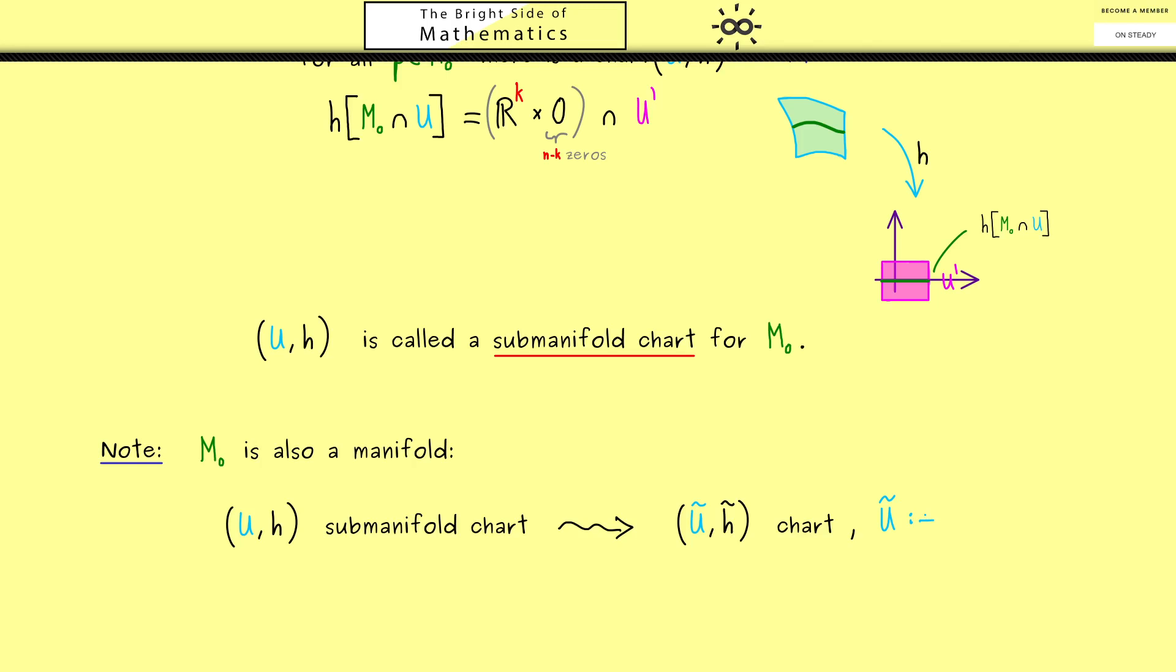This means that u tilde should be u intersected with M_0. In addition, h tilde is also not so complicated. I can just tell you what it does with the point p of M_0. First, we can just use the original map h, so we have h of p, which has, as we know, n-k zeros involved.